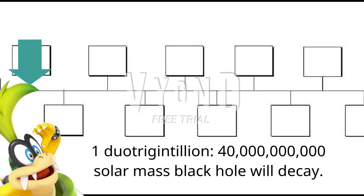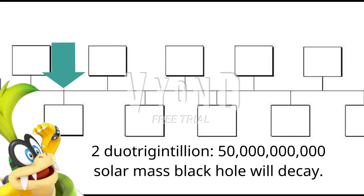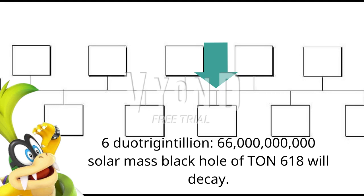1.91 Duotrigentillion: a 40 billion solar mass black hole will decay. 2 Duotrigentillion: a 45 billion solar mass black hole will decay. 3 Duotrigentillion: a 50 billion solar mass black hole will decay. 4 Duotrigentillion: a 55 billion solar mass black hole will decay. 5 Duotrigentillion: a 60 billion solar mass black hole will decay. 6 Duotrigentillion: a 65 billion solar mass black hole will decay. The 66 billion solar mass black hole of TON 618 will also decay.